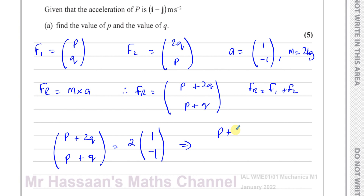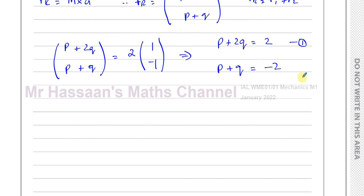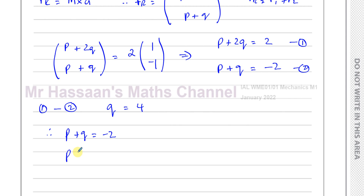This gives two equations: p + 2q = 2 (equation 1) and p + q = −2 (equation 2). Subtracting equation 2 from equation 1 eliminates p: 2q − q = 2 − (−2), so q = 4. Substituting back into equation 2: p + 4 = −2, therefore p = −6.